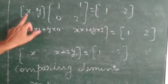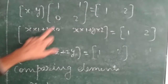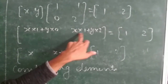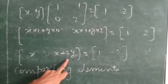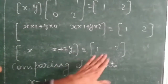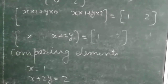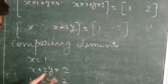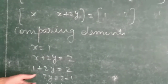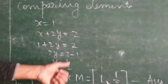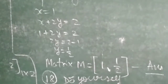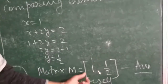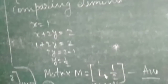How do we multiply? x into 1 plus y into 0 gives x, and x into 1 plus 2 into y gives x plus 2y. So this matrix equals [x, x+2y] = [1, 2]. Comparing corresponding elements: x equals 1 and x plus 2y equals 2. Now put the value of x as 1 to solve, and we get y equal to half. Therefore M equals [1, 1/2]. This is the answer for this question.